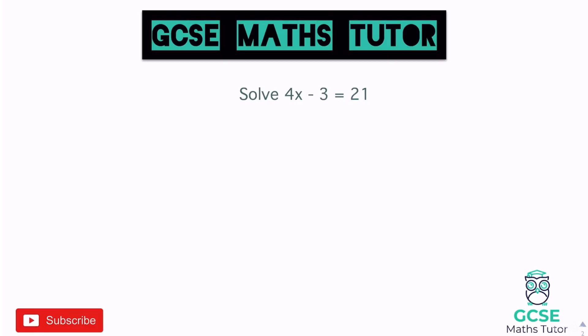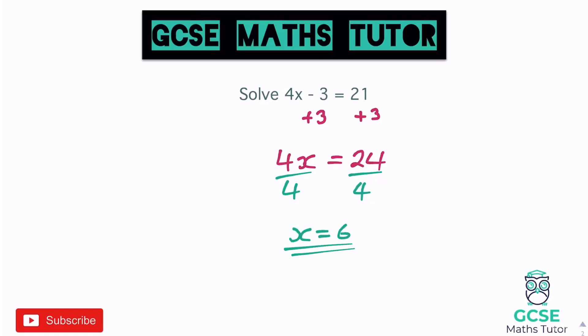Solve 4x minus 3 equals 21. x is being multiplied by 4 and then 3 is being taken away. To reverse taking away 3 we add 3 to both sides. That negative 3 is gone, giving us 4x equals 24. We then divide both sides by 4, giving 1x equals 6.